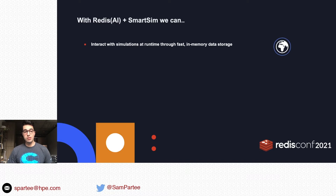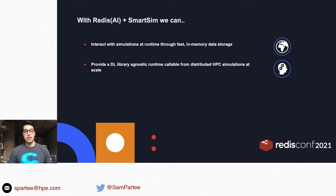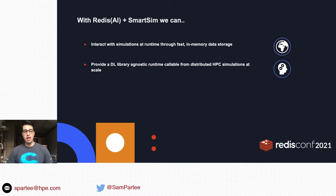With Redis AI plus SmartSim, we can interact with simulations at runtime through fast in-memory data storage, and provide a DL library-agnostic runtime callable from distributed HPC simulations at scale. Redis AI supports PyTorch, TensorFlow, TensorFlow Lite, and ONNX — which means you can pick up scikit-learn or Spark models as well. Instead of having to compile TensorFlow or PyTorch C APIs into every single simulation, which is impractical and hard to maintain, you can train your model using whatever DL library you want, then store those models within a Redis AI deployment and use the SmartSim clients and architecture to communicate with that deployment.